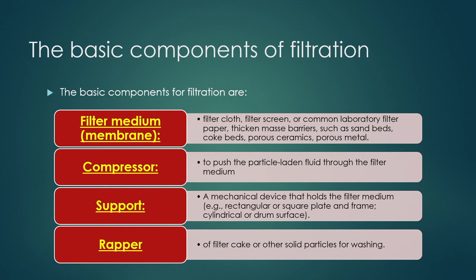The basic components of a filtration system include a filter medium — which may be called a membrane, cloth, woven wire, or sieve — a compressor, a support, and a wrapper. As filter media, commonly used materials include filter cloth, filter screen, laboratory filter paper, and thickened mass barriers such as sand beds, coke beds, porous ceramics, and other porous materials.